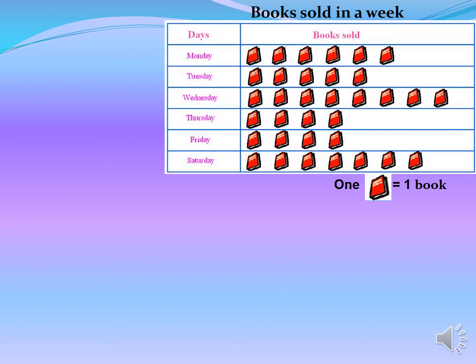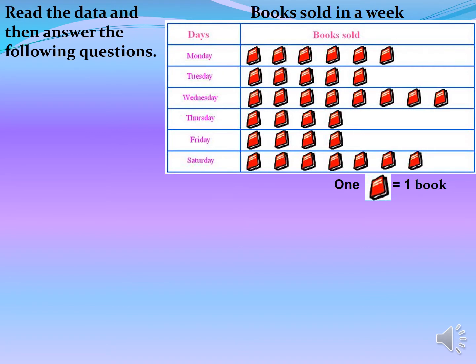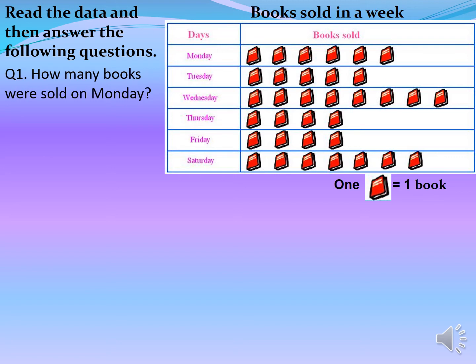Let us understand pictograph with more questions. Read the data and answer the following questions. The pictograph title is 'Books sold in a week.' The key shows one picture of a book represents one book. How many books were sold on Monday? Counting the books for Monday: one, two, three, four, five, six. Therefore, six books were sold on Monday.